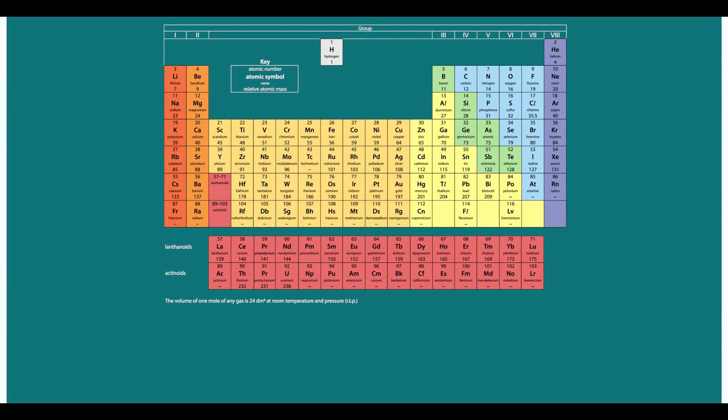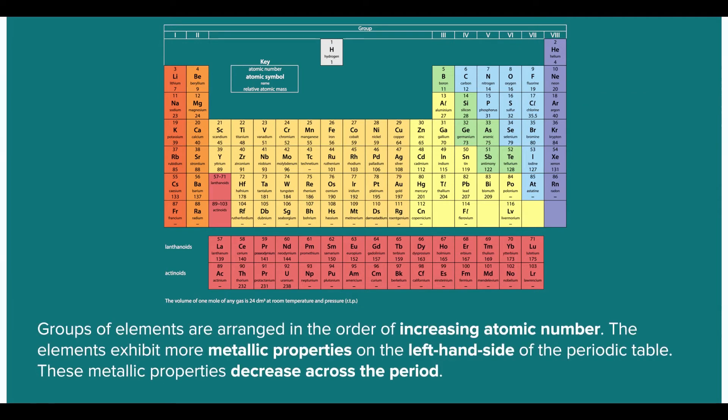You will also notice that groups of elements are arranged in the order of increasing atomic number. After the arrangement, chemists discovered that the elements exhibit more metallic properties on the left-hand side of the periodic table. These metallic properties decrease across the period.